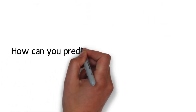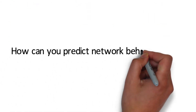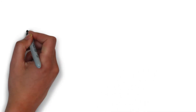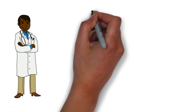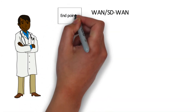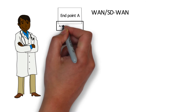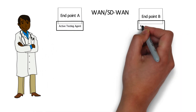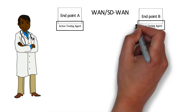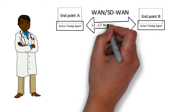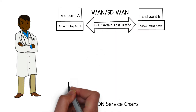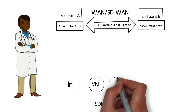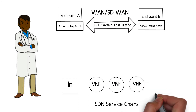How can you predict network behavior in this chaotic and complex network landscape? The answer is, in this new world of modern networks, active testing has to be done constantly, frequently, and automatically — anytime, anywhere, when changes occur, demand for new resources is needed, or new services are launched.